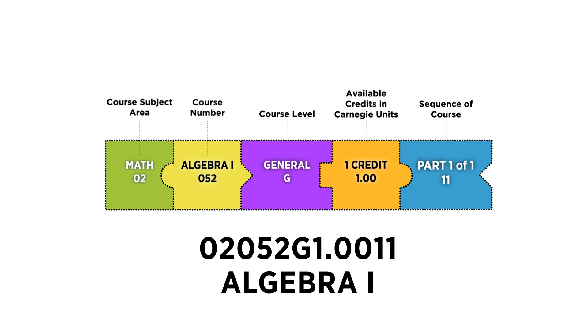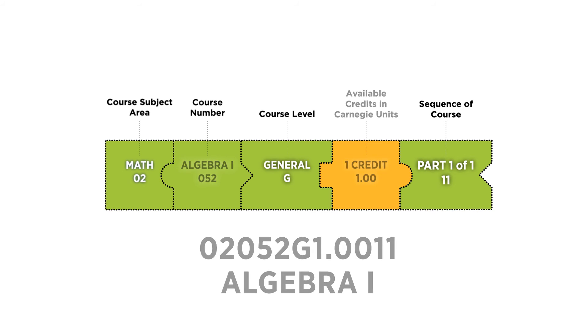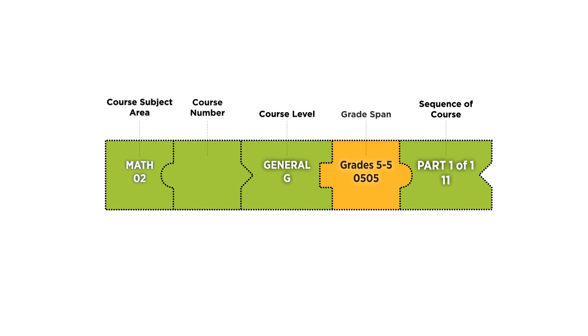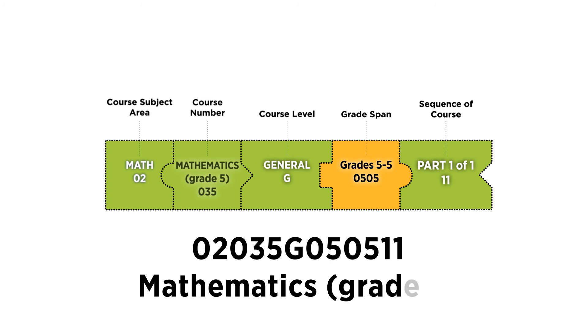The SCED identifier changes slightly for prior to secondary courses in which no Carnegie unit is available. In those cases, a grade span block is used instead.